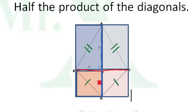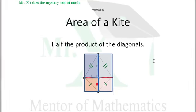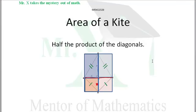If we take the area of the whole rectangle and divide it in half, then we have the area of the kite.